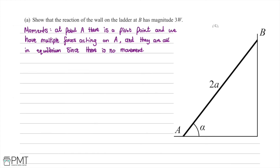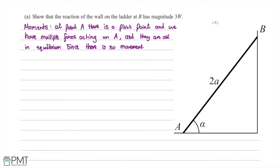We're going to annotate our diagram. From the angle alpha, the horizontal projection along the ground is 2a cos(alpha) and the vertical height up the wall is 2a sin(alpha). The builder is at the top so we draw a particle there with weight 7w acting downward. The weight of the ladder acts from the midpoint of the rod, giving a force of 1w downward.